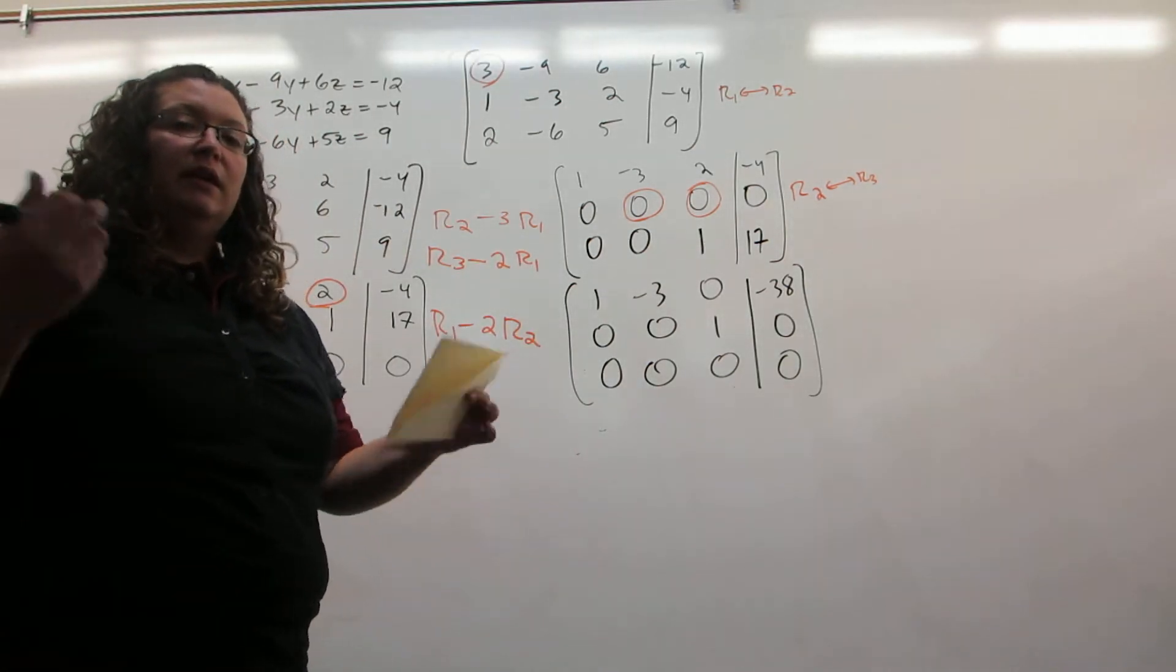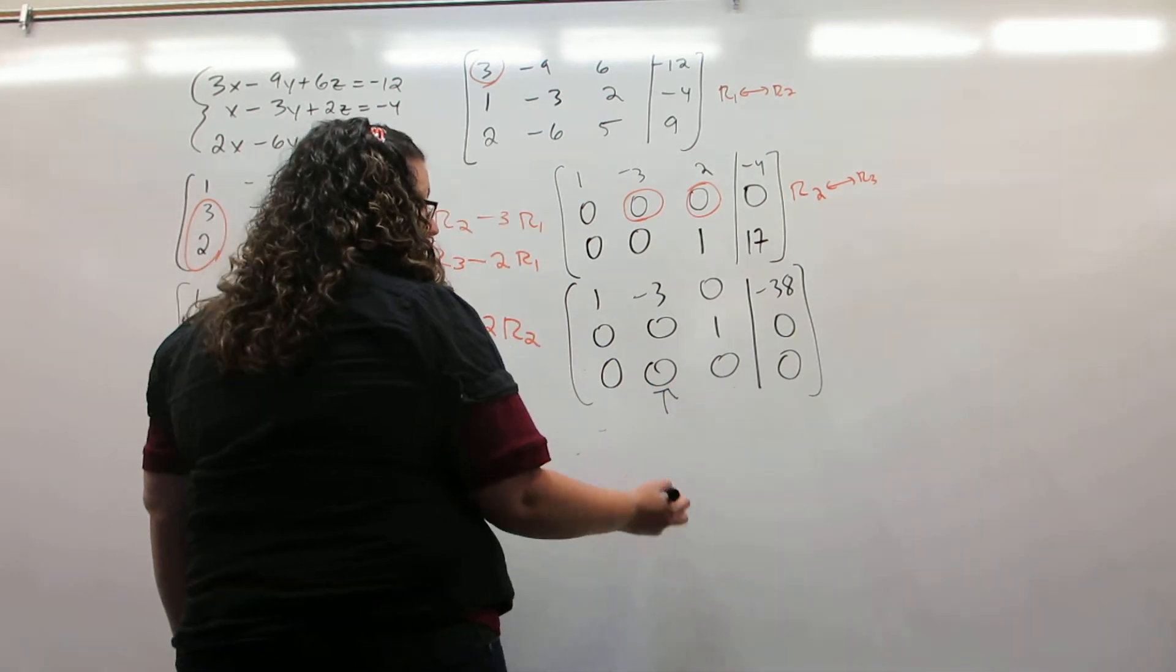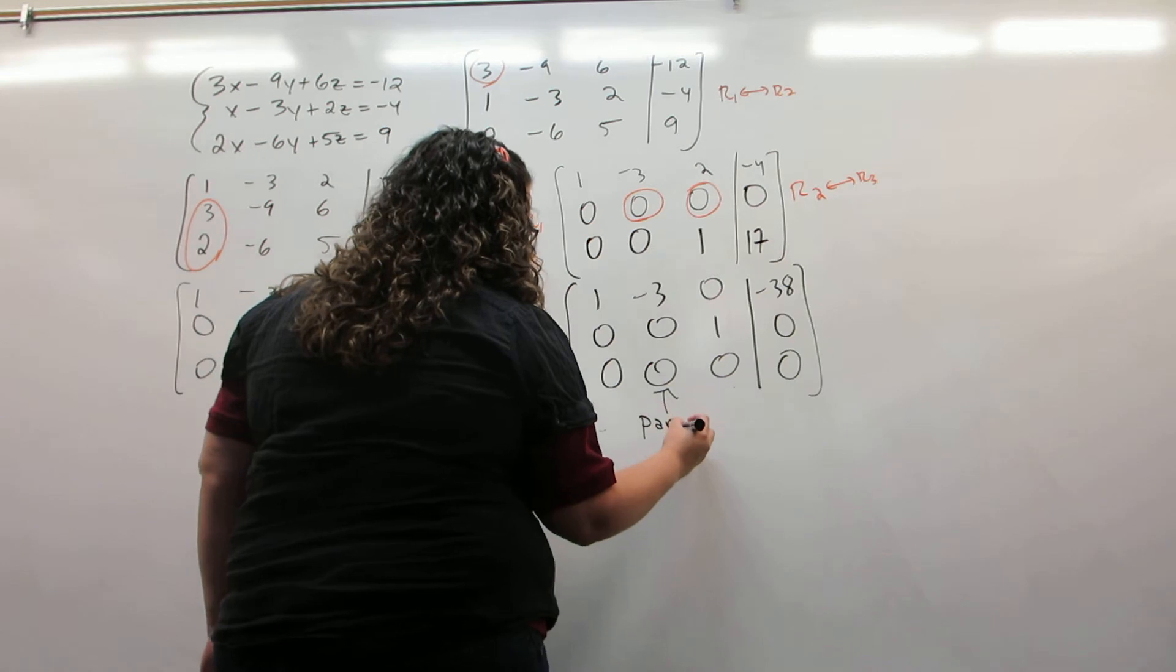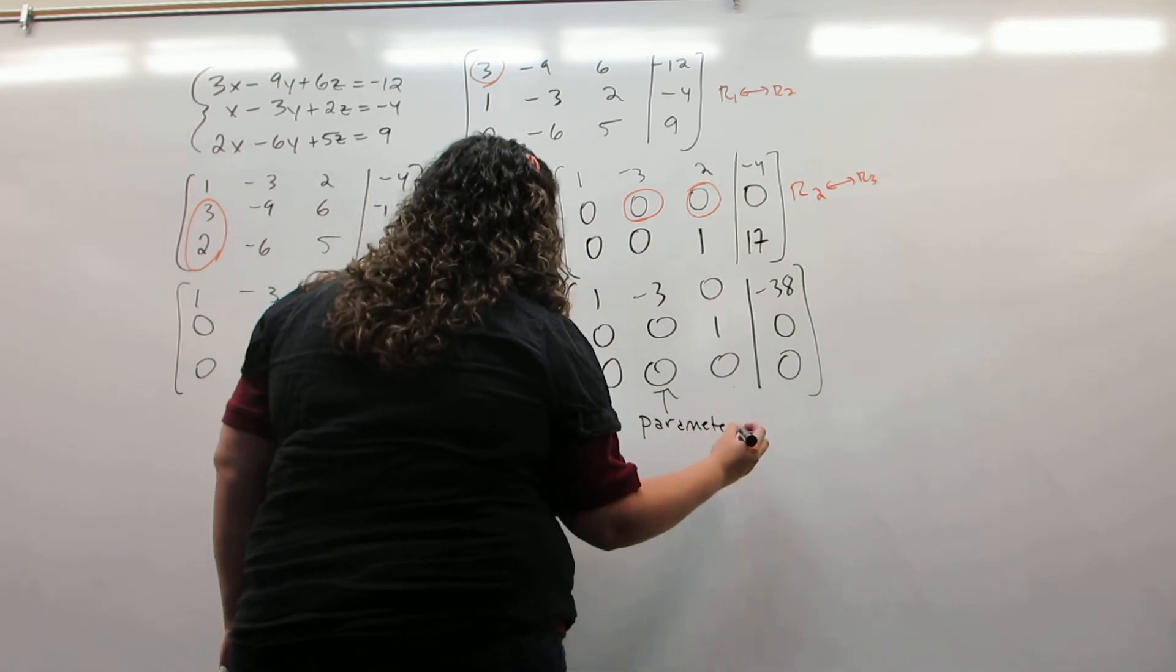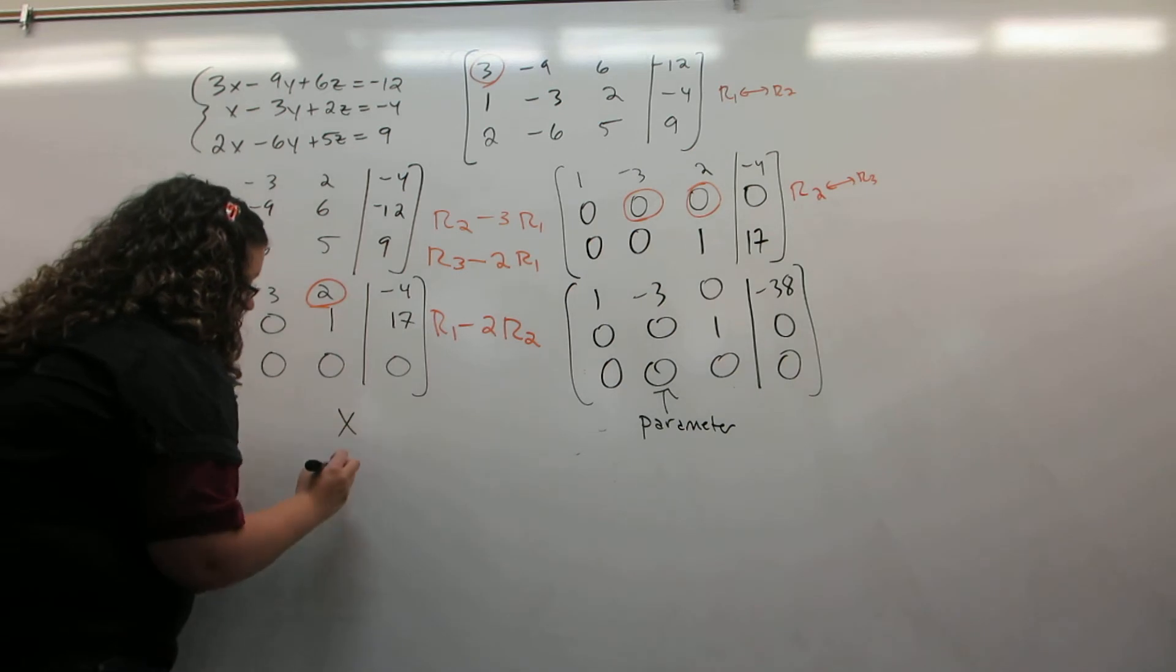Which column is missing a 1? And the answer is the second column, that corresponding to y. This tells us that it is the parameter column, and it means that that variable, the variable y, can be anything it wants to be.